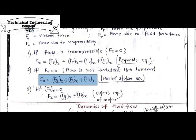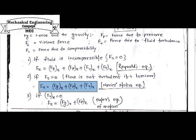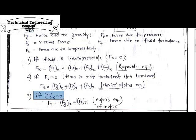Taking this equation further — when considering the fluid is non-viscous, meaning the viscous force is zero, then the resultant equation becomes Fx = Fg(x) + Fp(x), that is, gravitational force component plus pressure force component. This resultant equation is known as the Euler equation of motion.